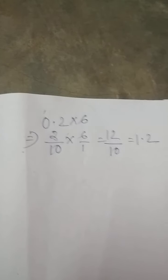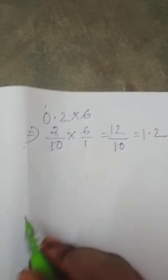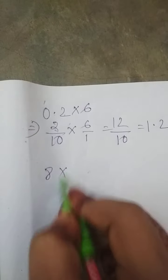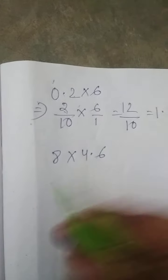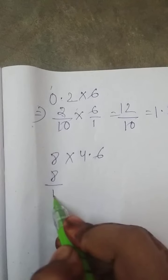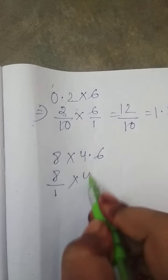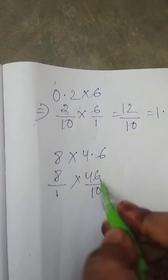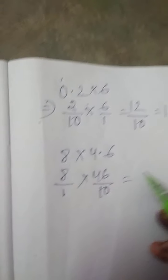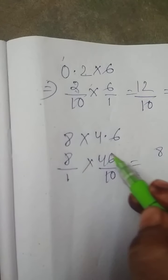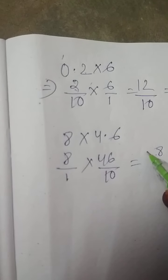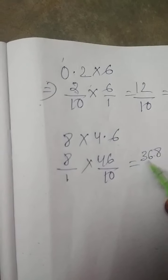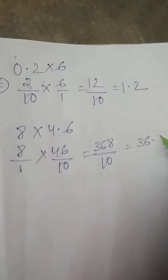We will take more example. Look at here: 8 into 4.6. The decimal number should first be converted into a fraction. 8 is 8 by 1, and 4.6 is 46 by 10. Now multiply the upper side — the answer is 36.8.